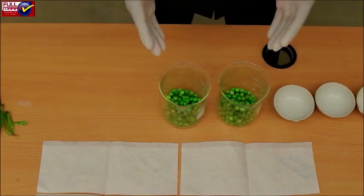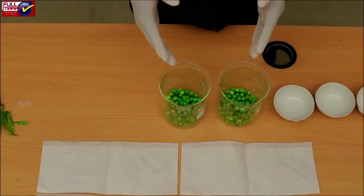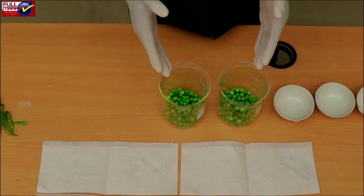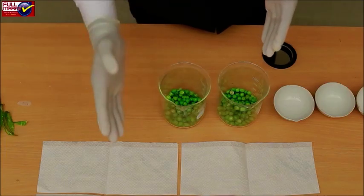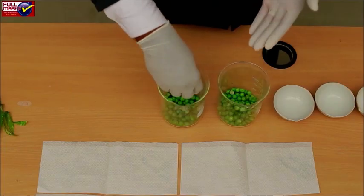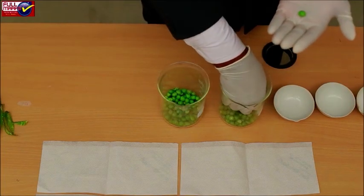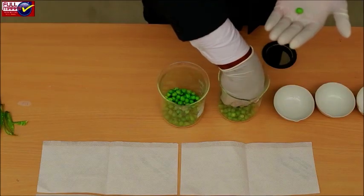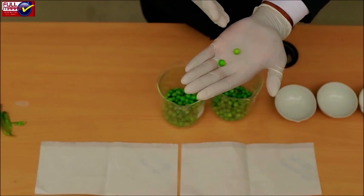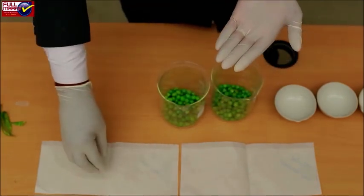Take a seed from each container and place them together on the napkin. Continue to pick seeds and arrange them in pairs. Thus, 64 pairs of seeds are obtained representing the 64 heterozygous F1 progeny. Note that all F1 individuals are represented by 1 round and 1 wrinkled seed.